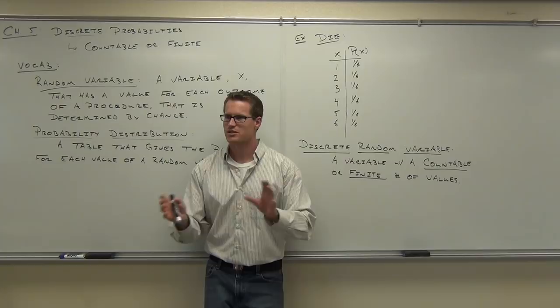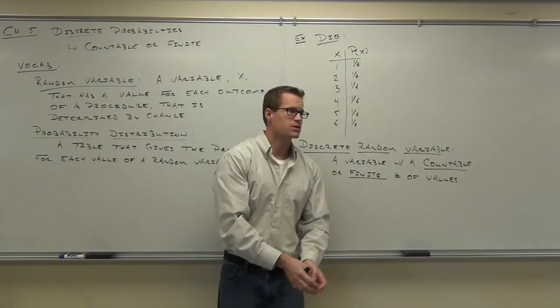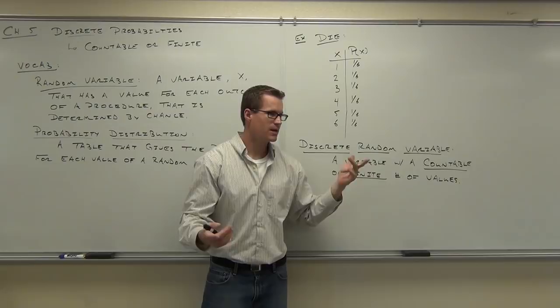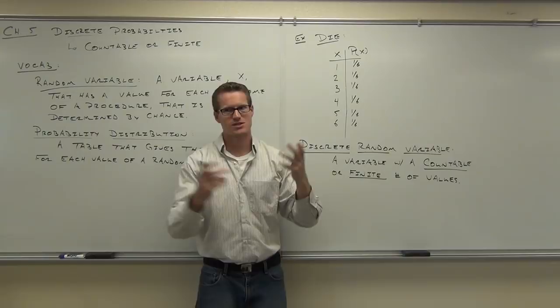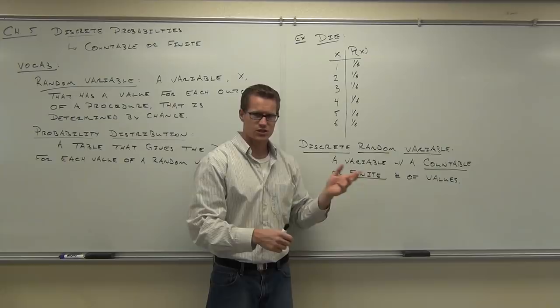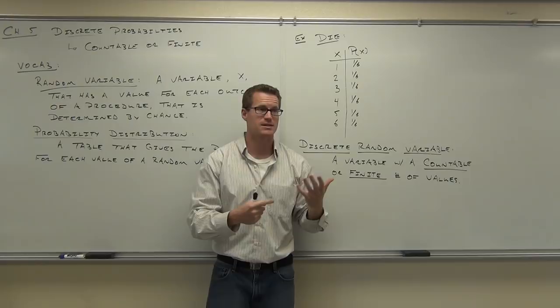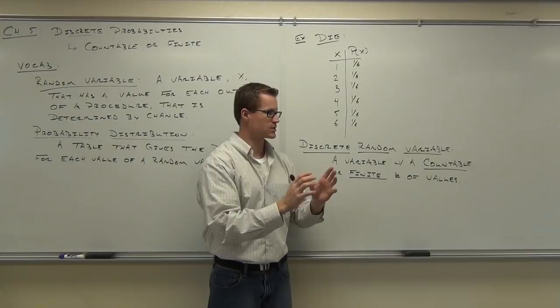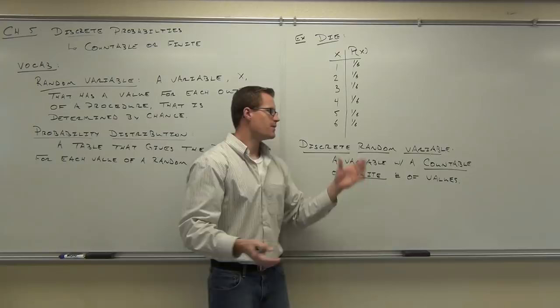Discrete means countable or finite — there's only a certain possible number of values you can choose from. For instance, even if I labeled a die with decimals like 1.135, there would still only be six choices. That's finite — even though there's a decimal, I can only get six things out of it. So it doesn't necessarily mean a whole number; it means it's countable, or there's only a certain amount you can get out of your procedure. It doesn't have an endless number of possibilities.